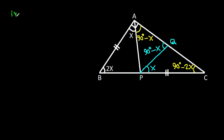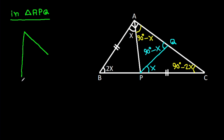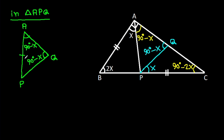In triangle APQ, the angle at A is 90 degrees minus 2x, and angle APQ works out to 90 degrees minus 3x.